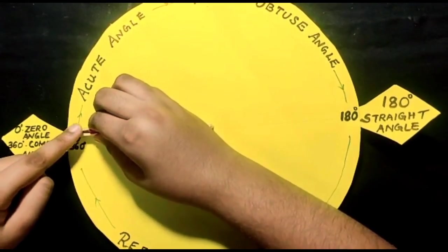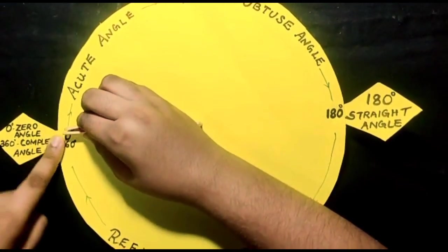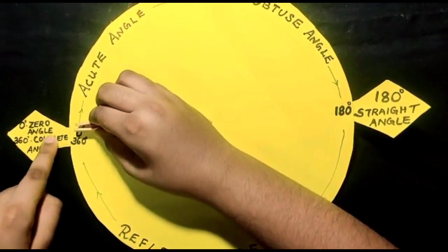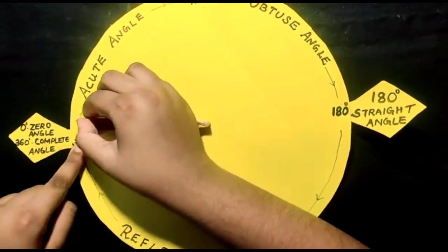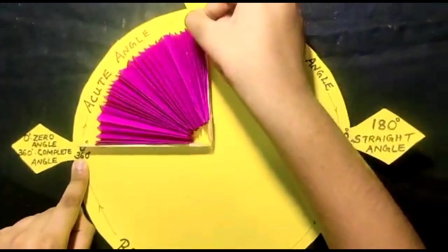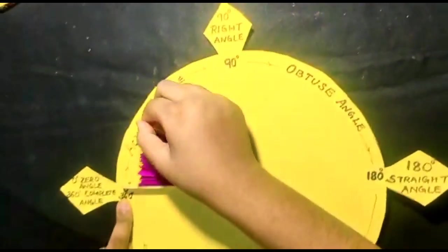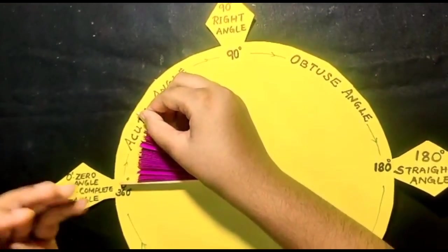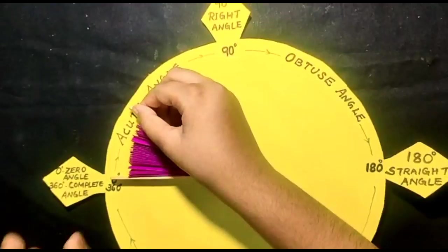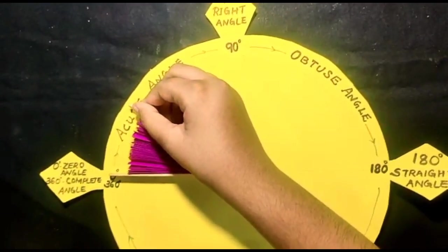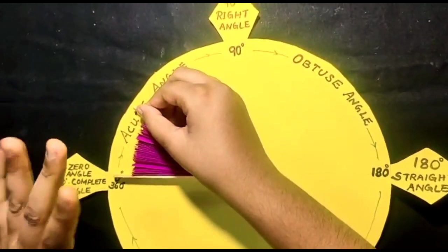When these two arms are at zero degree, it is zero angle. Between zero degree and 90 degree, it is acute angle. Examples are 1, 2, 54, 60, 70 and etc.